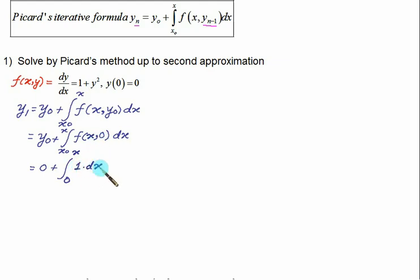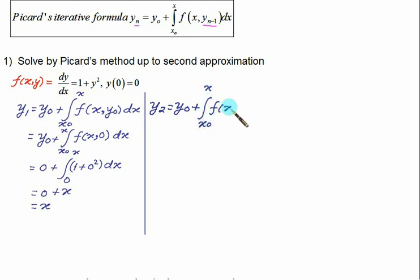This is x_1, it's x_0, here we have to put y_1. This is x_0 to x, function of x. What is y_{n-1}? That is y_0, which is same as this value, that is y_1 of dx. y_0 is 0, x_0 is 0, function f(x,y), that is this function.